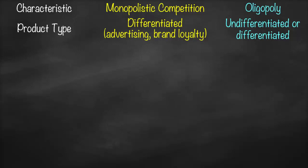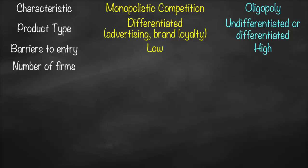For oligopoly, the product could be either undifferentiated or differentiated — meaning either it's identical and homogeneous, or it could be heterogeneous with little differences. The barriers to entry for monopolistic competition are very low, while for oligopoly they are very high. The number of firms in monopolistic competition is large, while for oligopoly it is small — between two to ten.